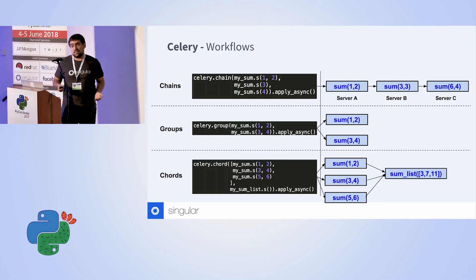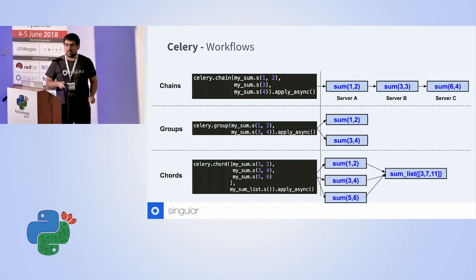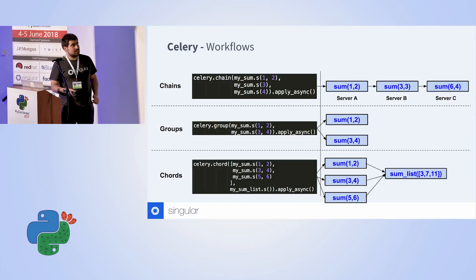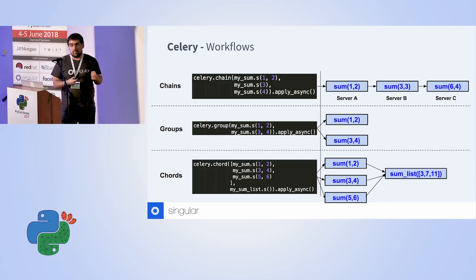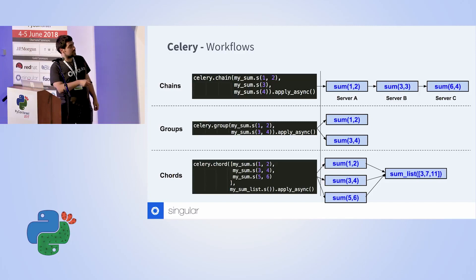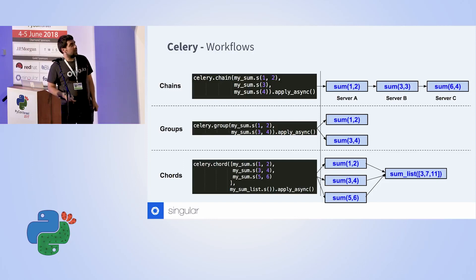Another cool thing about Celery is the ability to define interesting workflows, which greatly appealed to us — specifically the ability to define dependencies between tasks. You can define that certain tasks run sequentially and depend on the result of the previous task using chains. You can also define tasks that run in parallel using groups. The really cool thing is the ability to combine them with something called a chord, which runs a group of tasks and then executes a callback after all of them finish.